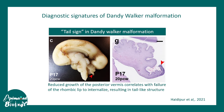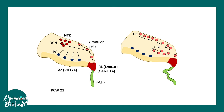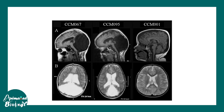The rhombic lip is a germinal zone containing stem cells for different cerebellar cell types. The rhombic lip gives rise to granule cells (glutamatergic cells), deep cerebellar nuclear cells (DCNs), and unipolar brush cells. Quite a lot of different cerebellar cell types originate from the rhombic lip, and it is speculated that the rhombic lip is the origin of this disease, with problems occurring at the level of the rhombic lip and the cells that emerge from it.